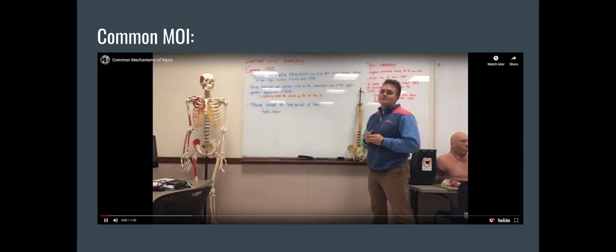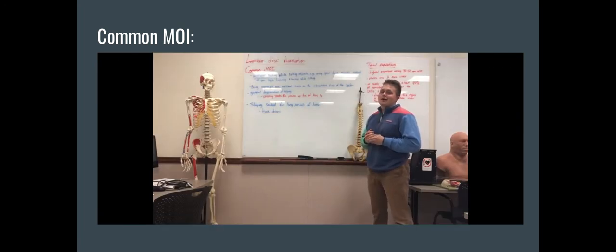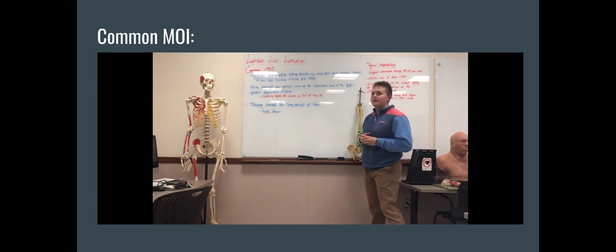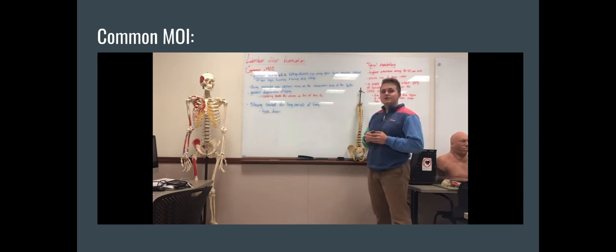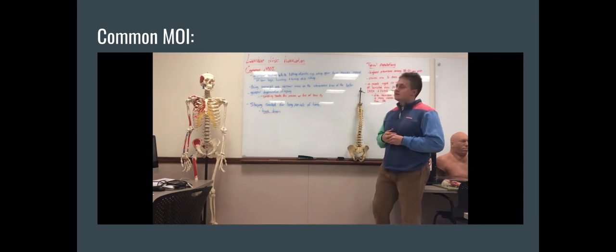When we look at common mechanisms of injury for lumbar disc herniation, one of the most common and frequent is improper loading, especially while lifting heavy objects and when you use your upper and lower back muscles, especially your erector spinae, instead of using your legs as a propulsive force. Additionally, this commonly occurs when you twist and turn while you lift an object and most of the time this is just a way to maneuver whatever you're lifting and get it to where it needs to be.